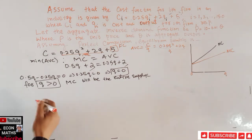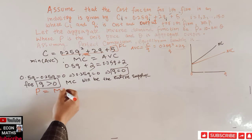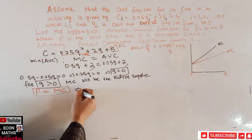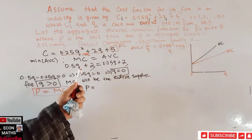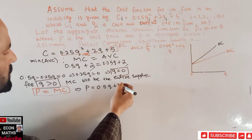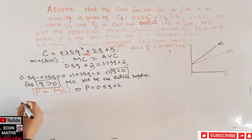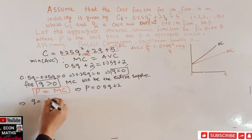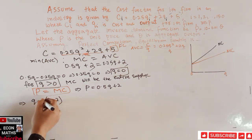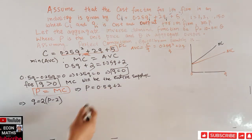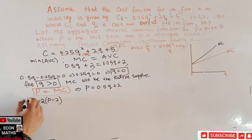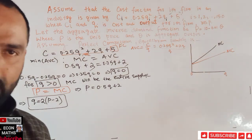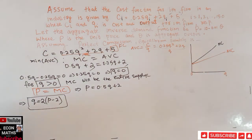In perfect competition, price equals marginal cost: P = MC = 0.5q + 2. Solving for q gives the individual firm's supply curve: q = 2(P − 2). This is the quantity each individual firm supplies at any given market price P.